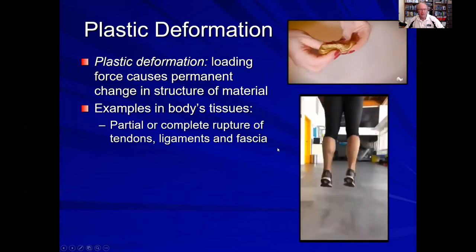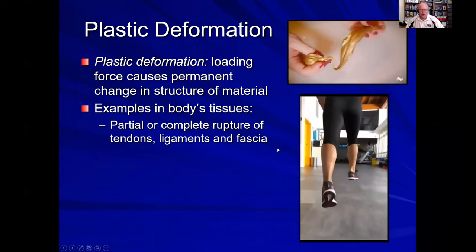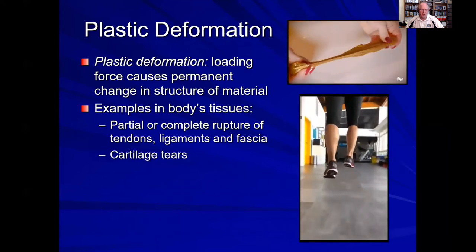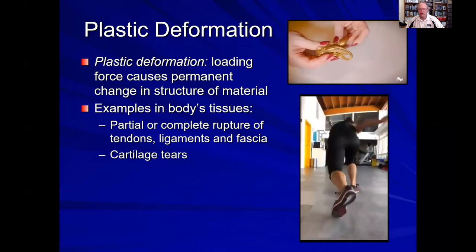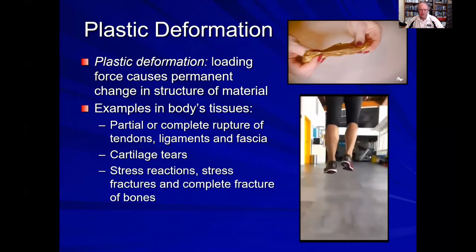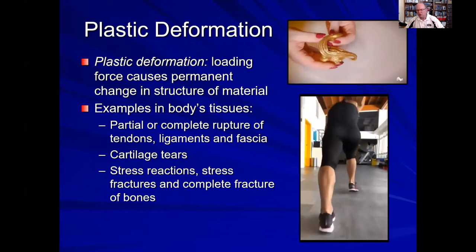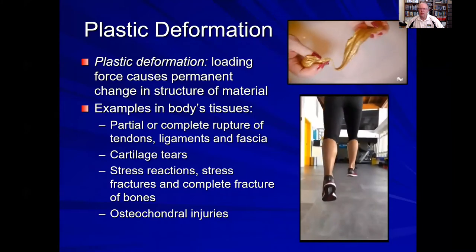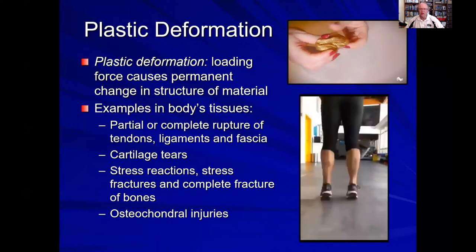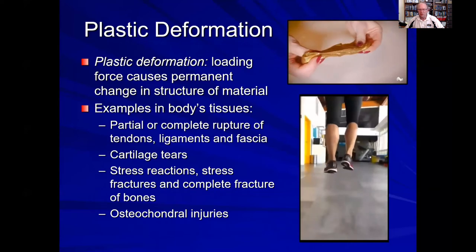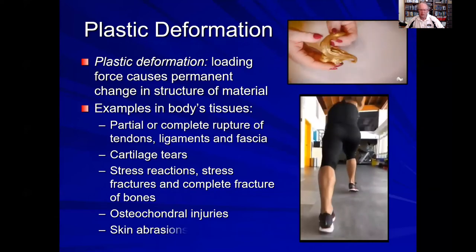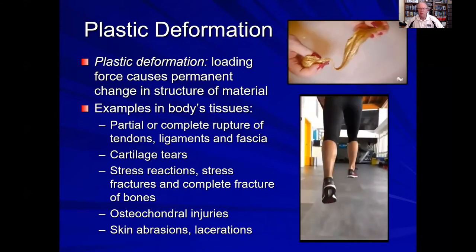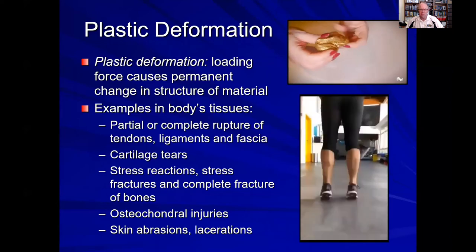Examples of plastic deformations in the body's tissues include partial or complete ruptures of fascia, ligament, or tendon. Tension and shearing forces can cause cartilaginous tears. We can have stress reactions, stress fractures, and complete fractures of bone. We can have osteochondral injuries such as in ankle sprains — often at the tibial junction in the talus — which are plastic deformations of cartilage and bone. Additionally, skin injuries such as lacerations, abrasions, and ulcerations are also plastic deformations.